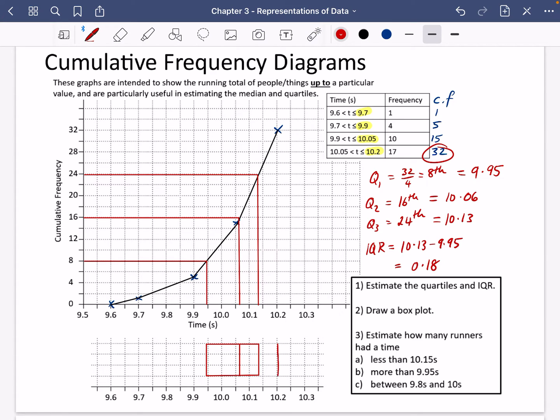And we're going to also presume that the lower boundary is 9.6, and then I'm just going to join this together to make a box plot.